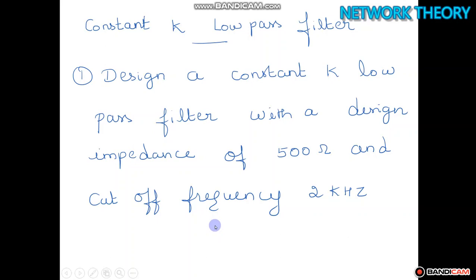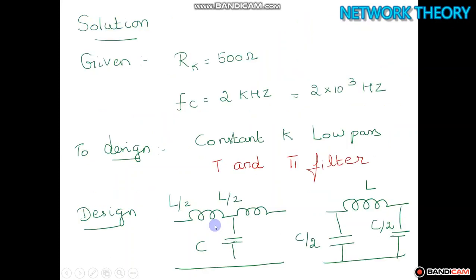Both T and phi sections. So first let us write the solution. What are the given values? RK is equal to 500 ohms and FC is equal to 2 kilohertz, so 2 into 10 power 3 hertz. It is asked to design a constant K low pass filter both T and phi sections.